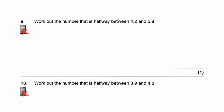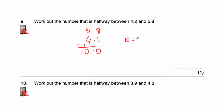Question nine says: work out the number that's halfway between 4.2 and 5.8. So let's add them up: 5.8 plus 4.2. 8 plus 2 is 10, put our 0 down and carry our 1. 5 plus 4 is 9, plus 1 is 10. So adding these two numbers gives us 10, and 10 divided by 2 is equal to 5. The number halfway between 4.2 and 5.8 is 5.